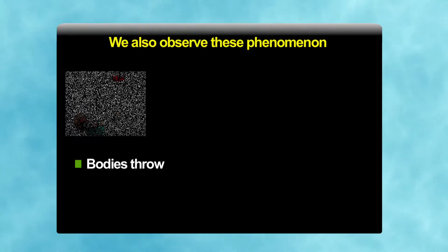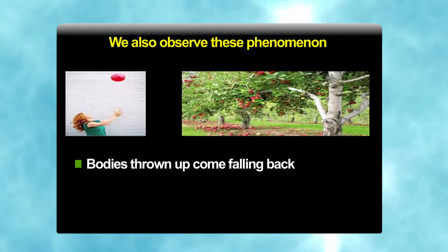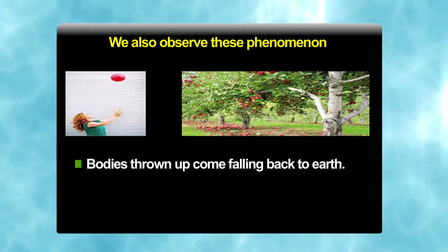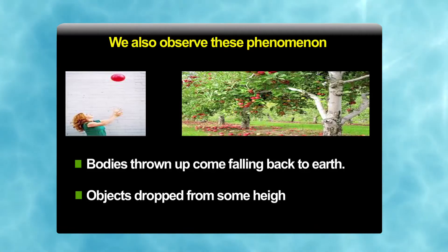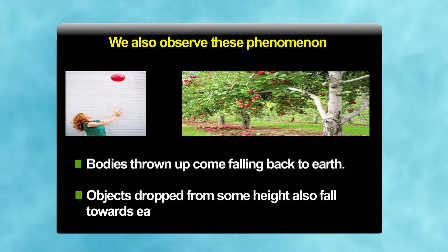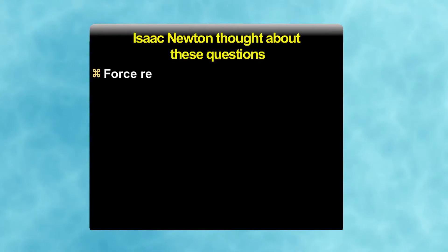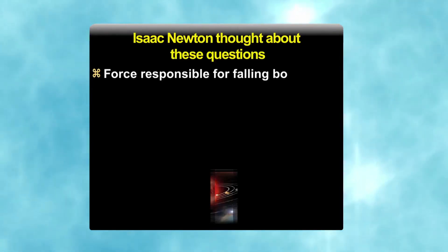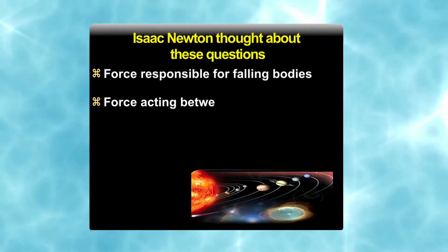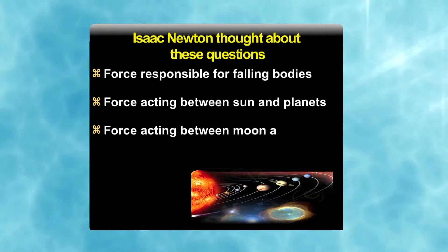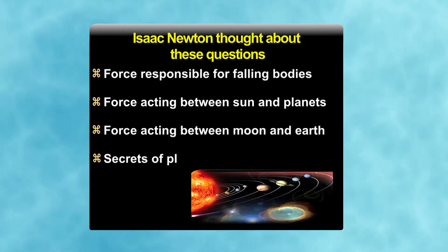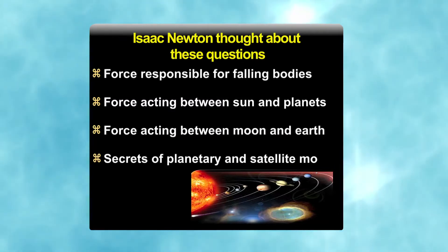We also observe these phenomena in day to day life — when a body is thrown up, it comes falling back to the earth; objects dropped from some height also fall towards the earth. Newton thought about these questions: what are the forces responsible for falling bodies? Is this force the same force acting between sun and planets, moon and earth? And what are the secrets of planetary and satellite motion?